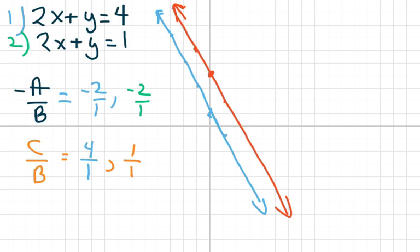So basically, if I rewrote these equations, for the blue one, I'm going to have y = -2x + 4. And for the second one, I'm going to have y = -2x + 1.